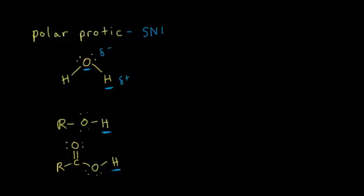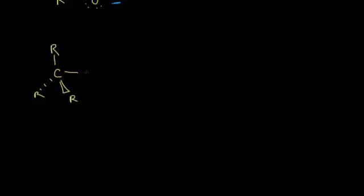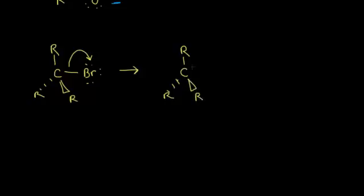So let's look at an SN1 mechanism and see why a polar protic solvent favors SN1. If I started off with an alkyl halide — some R groups attached to a carbon, and that carbon attached to a bromine — the first step in an SN1 mechanism is dissociation. This lone pair of electrons kicks off onto the bromine, which takes away a bond to the carbon. So we form a carbocation — this carbon is now positively charged. The bromine picks up a lone pair of electrons, giving it a negative one formal charge.